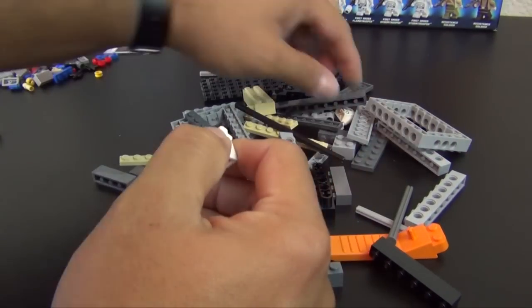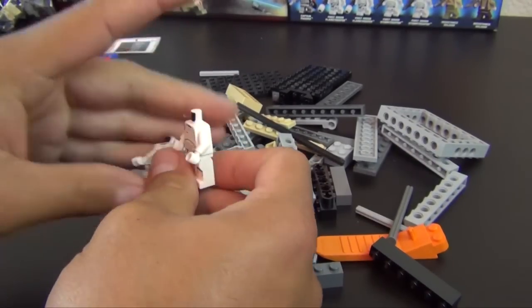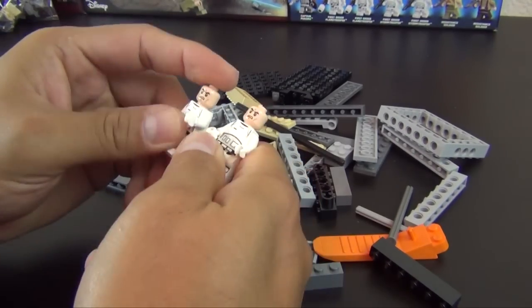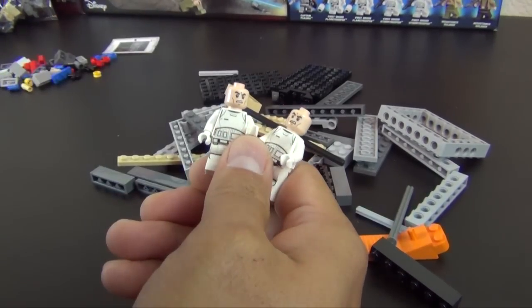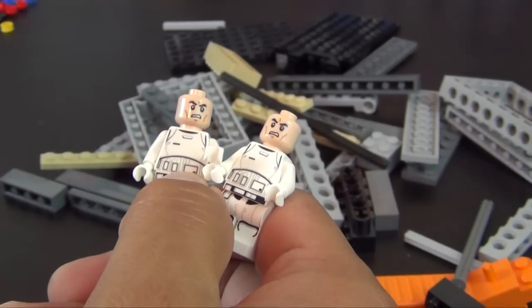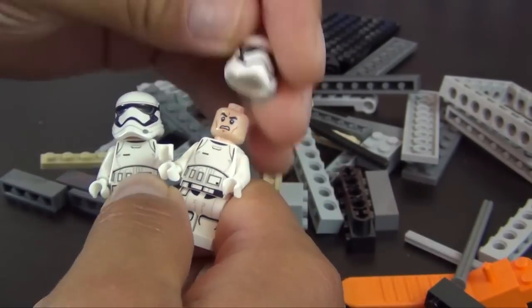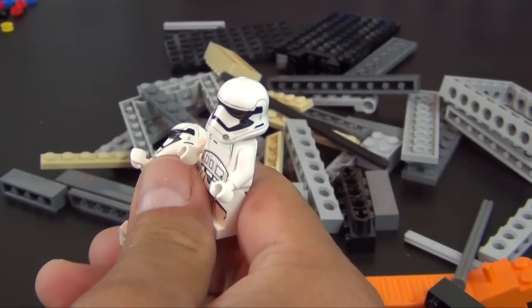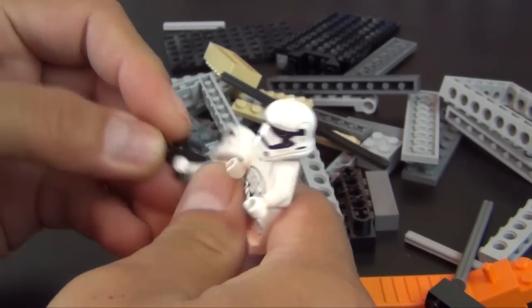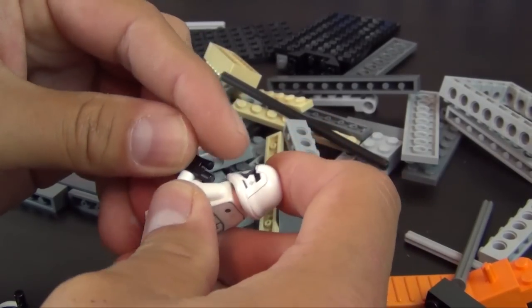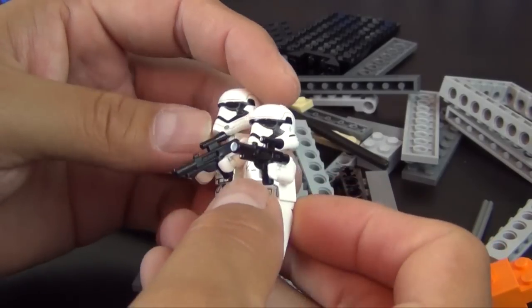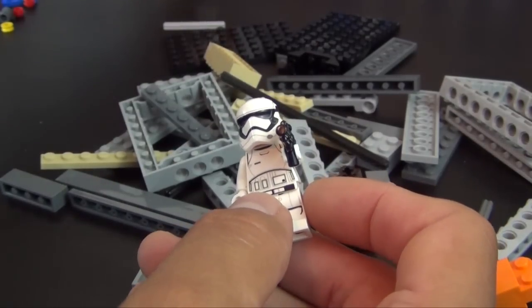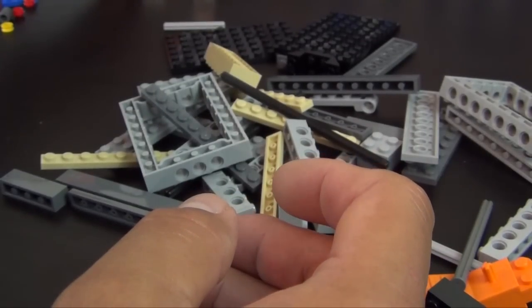Alright, so we're going to begin with our First Order stormtroopers. These guys are identical. Maybe their faces are different? Nope, their faces are identical as well. They have the same helmets and the same little blasters. But when you're building an army that's typically the way it is - they all pretty much look the same, same uniform, same issued helmet and weapon. So that's two soldiers from the First Order army.